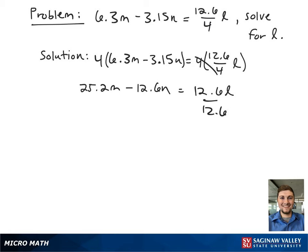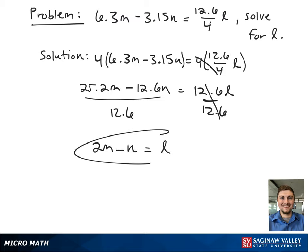Next, we're going to divide both sides by 12.6 so we can get our l term by itself. After reducing, this gives 2m minus n equals l, and that is our final answer.